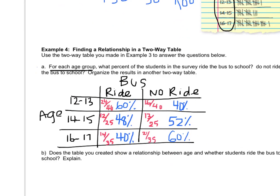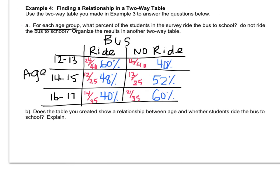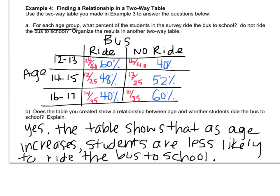Does the table show a relationship between age and whether students ride the bus to school? As kids get older, they are not riding the bus as much — the percentage riding is decreasing while not riding is increasing, showing an inverse relationship. So yes, the table shows that as age increases, students are less likely to ride the bus to school.